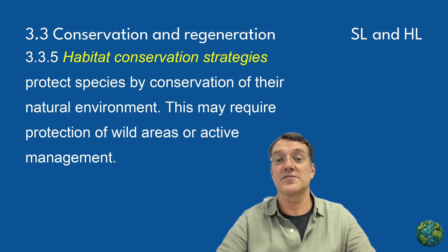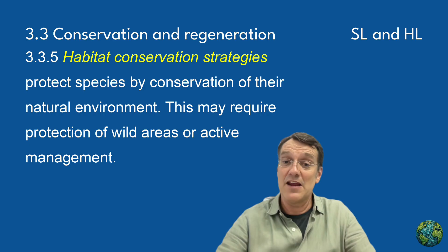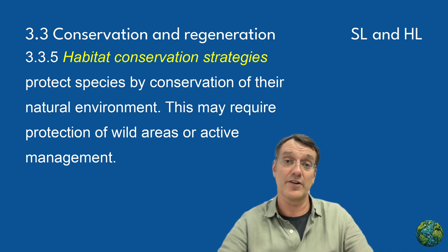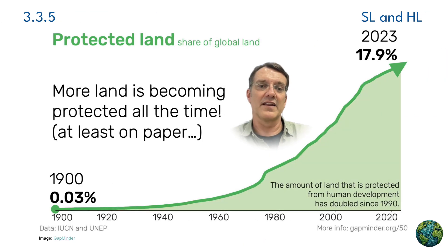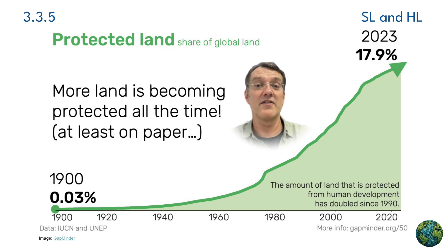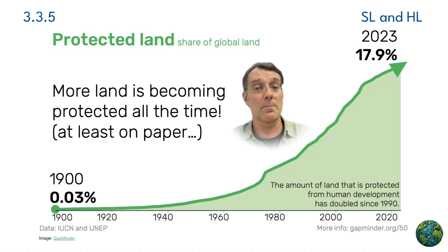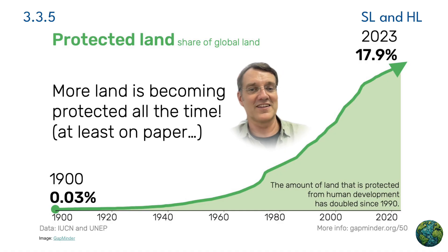Habitat conservation strategies protect species by conserving their natural environment, requiring either protection of wild areas or active management depending on the specific context and threats facing the ecosystem. The amount of protected land worldwide has increased dramatically over time. In 1900, only 0.03% of global land was protected, but by 2023 this figure has risen to 17.9% — almost a fifth of all the world's land. However, quantity doesn't always equal quality; effective management is crucial for protected areas to fulfill their conservation purpose.